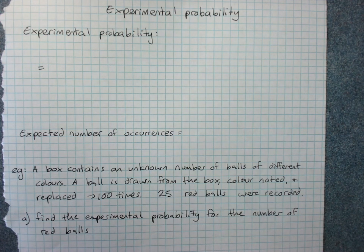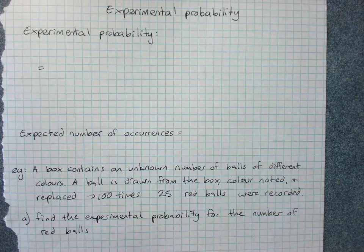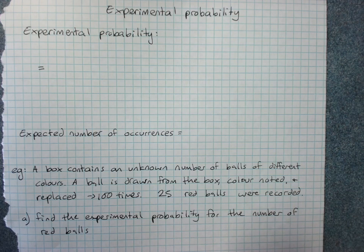Experimental probability. In some situations we might not know all the possible outcomes in the sample space, so we might not be able to find theoretical probability—number of favorable outcomes divided by number of outcomes in the sample space.